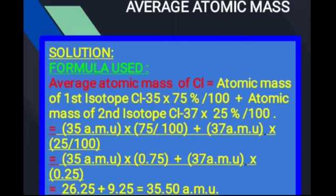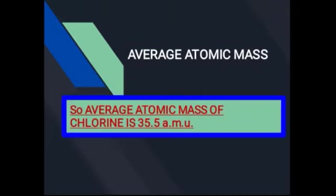اس کا مطلب کیا ہوا — periodic table میں atomic weight جو decimal points میں لکھا دیکھتے ہیں وہ average atomic mass ہے۔ Chlorine کا average atomic mass کتنا ہے: 35.5۔